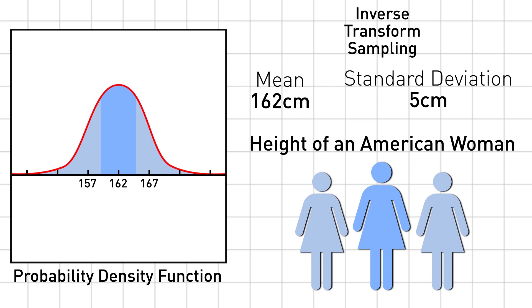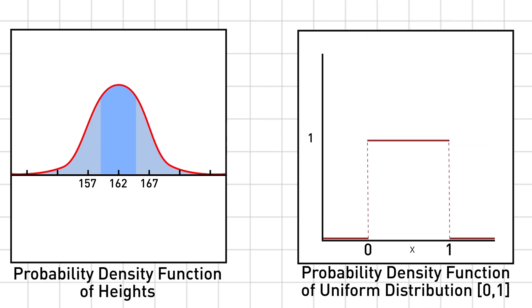Just for comparison, this is the probability density function of the uniform distribution on 0, 1. It's flat, since all points are equally likely.